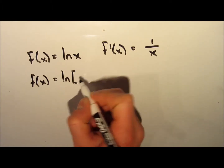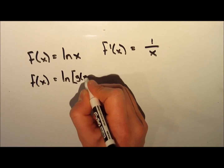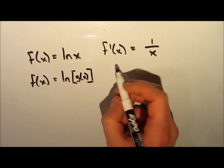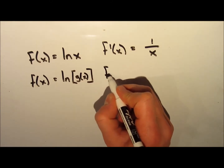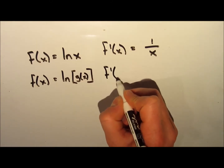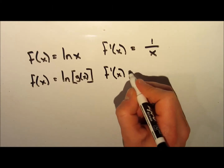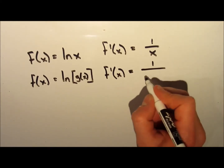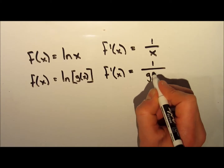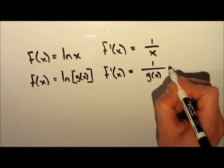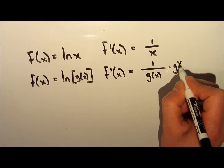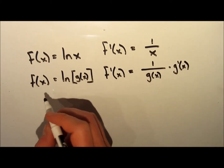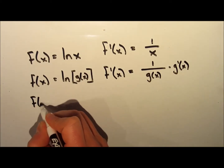If we want to take the derivative of ln of some bigger part — we'll call this g(x) — all we have to do is take 1 over that g(x) part, the more complicated part in brackets, multiplied by the derivative of g(x). We'll go over some examples of these in a bit.